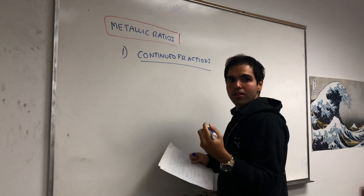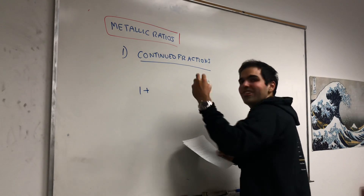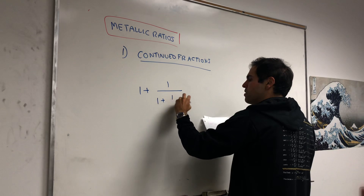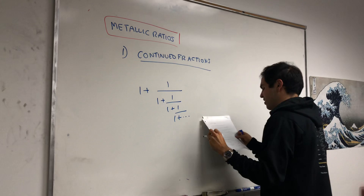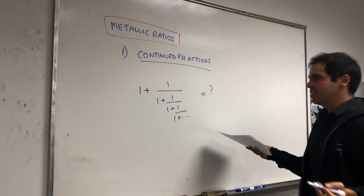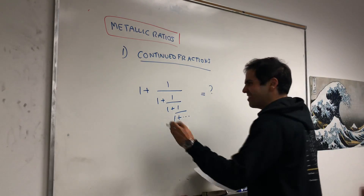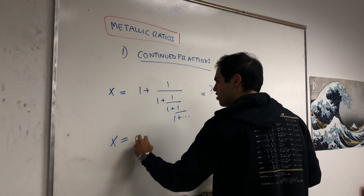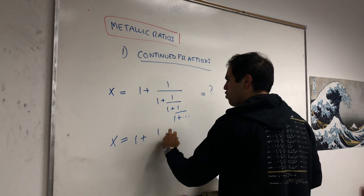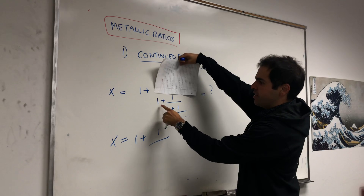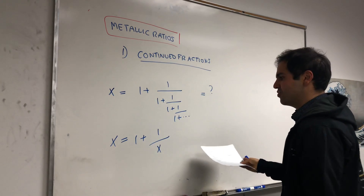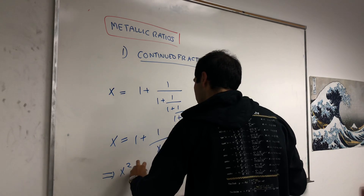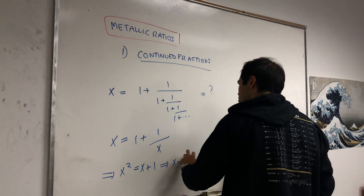One of the classic places the golden ratio appears is the following: what is the value of the continued fraction 1 plus 1 over 1 plus 1 over 1 plus 1 over 1 plus dot dot dot? Notice it's fractal-like — if we call this number x, then x equals 1 plus 1 over x. Multiplying by x gives x squared equals x plus 1, which gives x equals the golden ratio.